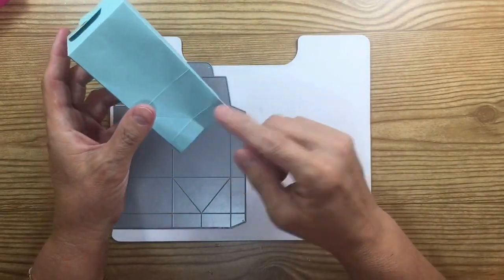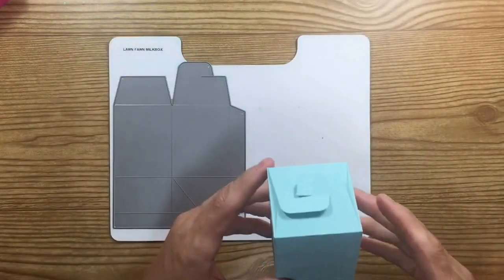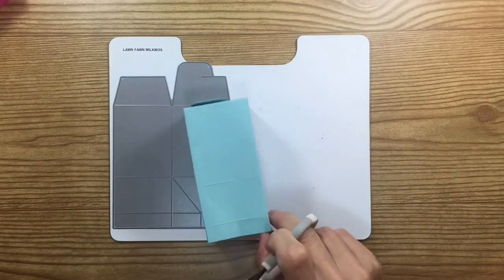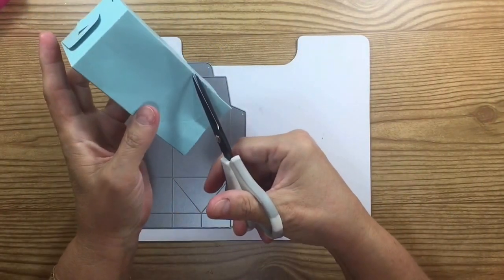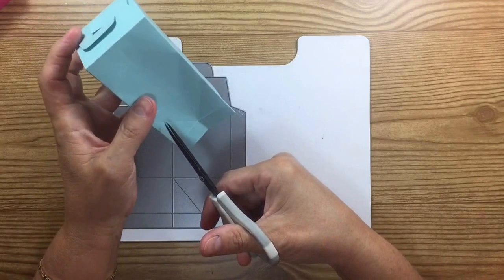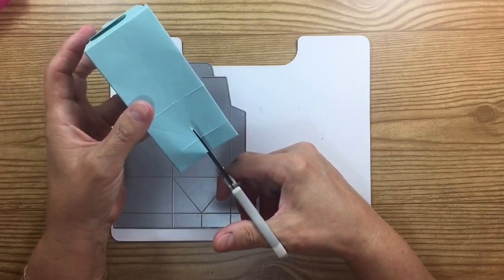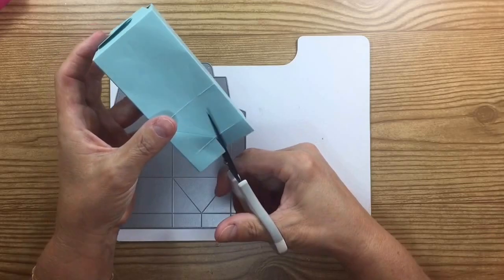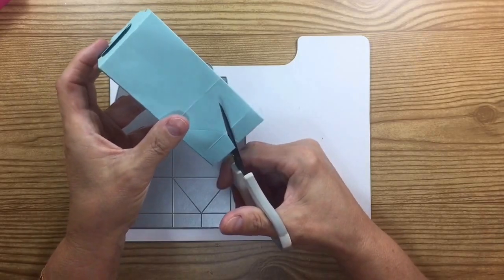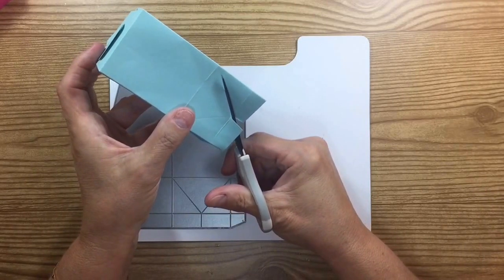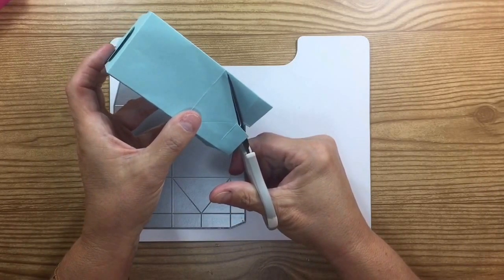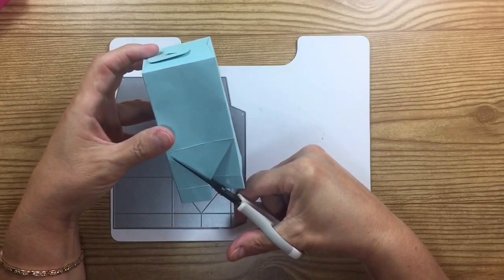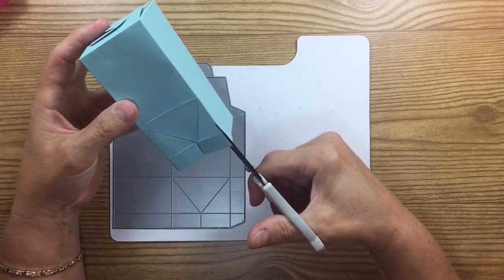So all I did is I took this bottom section, let me find my scissors, and I cut where the little inlays are for the corner pieces. I just took it and I cut it all the way down and then I cut this piece off.